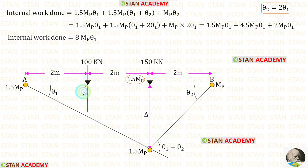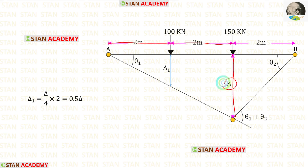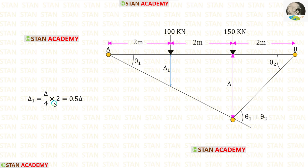For the external work done, we need the height under the point load 100 kN — let us call it delta 1. For the distance of 4 m the height is delta. We need the height at the distance of 2 m, so multiplying accordingly, we get delta 1 equal to 0.5 delta.